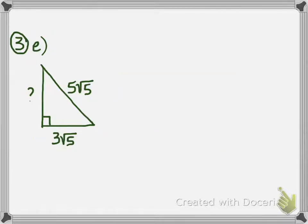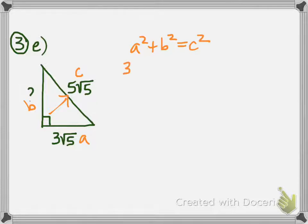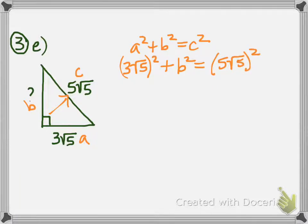For this problem we do the same thing — we know two sides of a right triangle so we'll use the Pythagorean theorem. Side c is 5√5 because it's across from the right angle. I'll call 3√5 side A. The Pythagorean theorem is A² + B² = C². Make sure when squaring a radical with a coefficient you always put it in parentheses so you remember to square both parts. For (3√5)², 3² = 9 and √5² = 5; for (5√5)², 5² = 25 and √5² = 5.